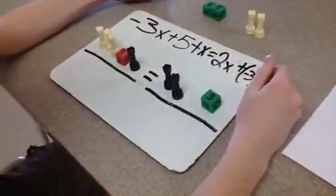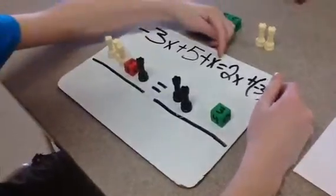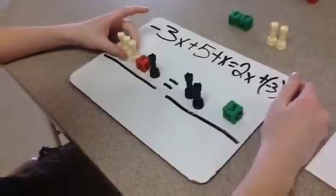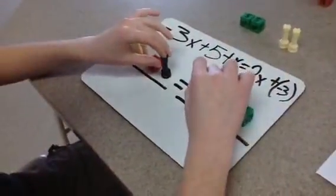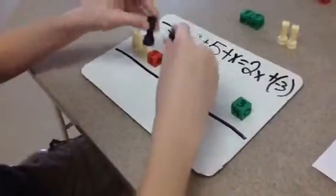Okay, so this is our next equation. We have -3x + 5 + x = 2x + (-3). To start with, we can remove the same thing from each side, because if we had a scale, the scale would stay balanced.